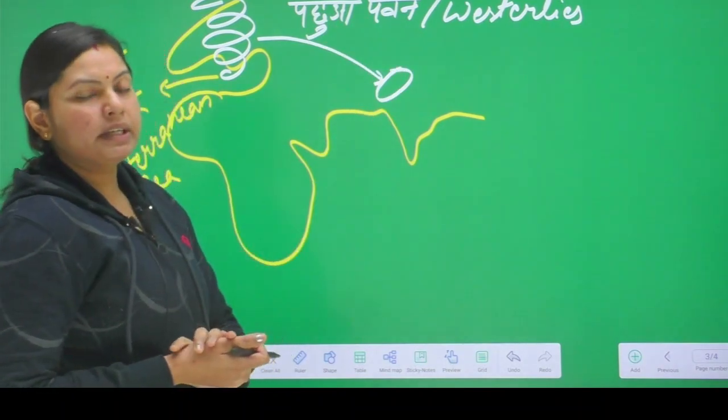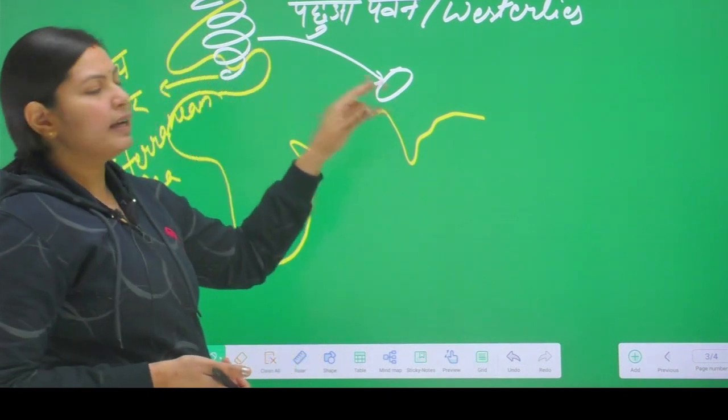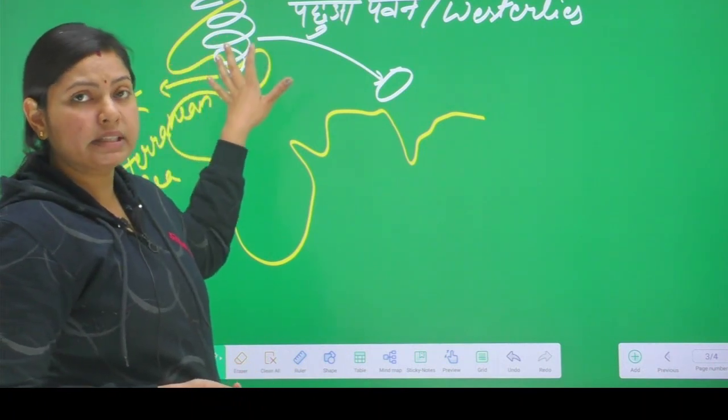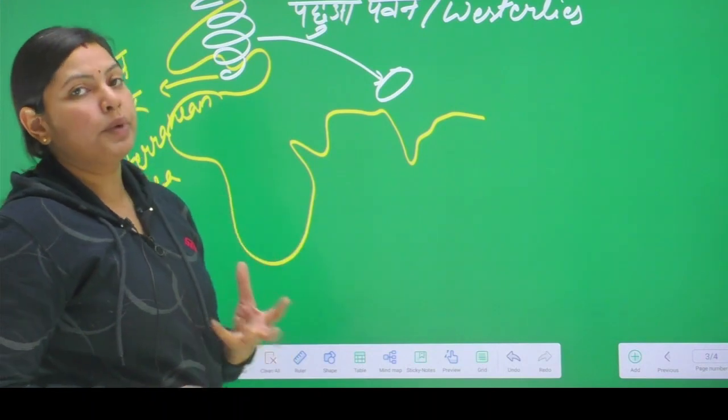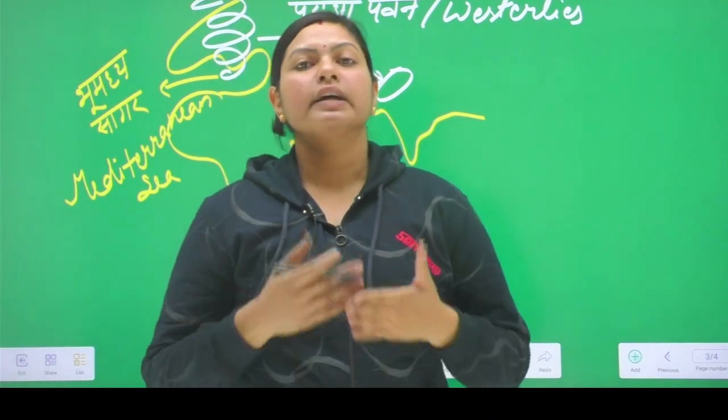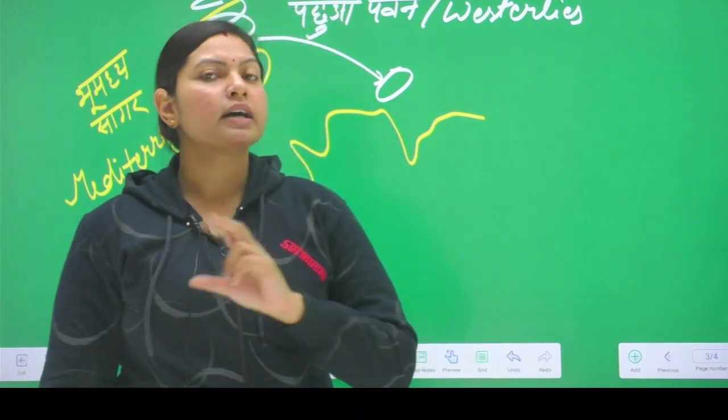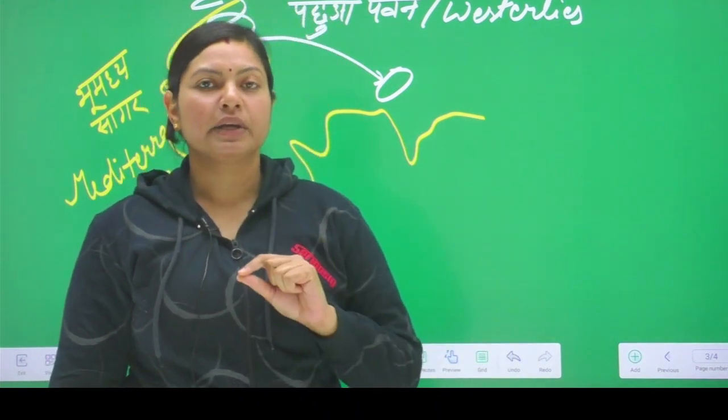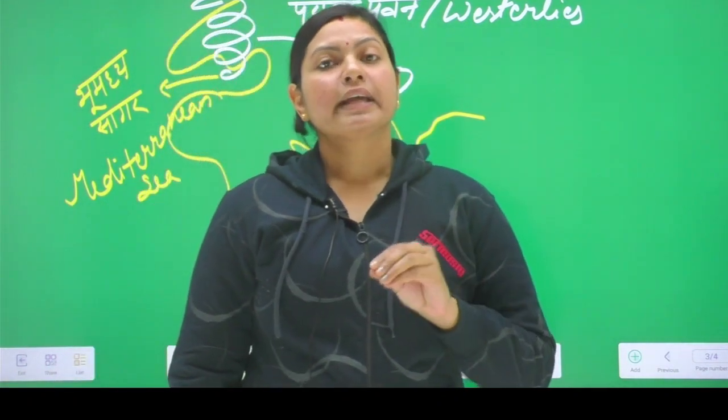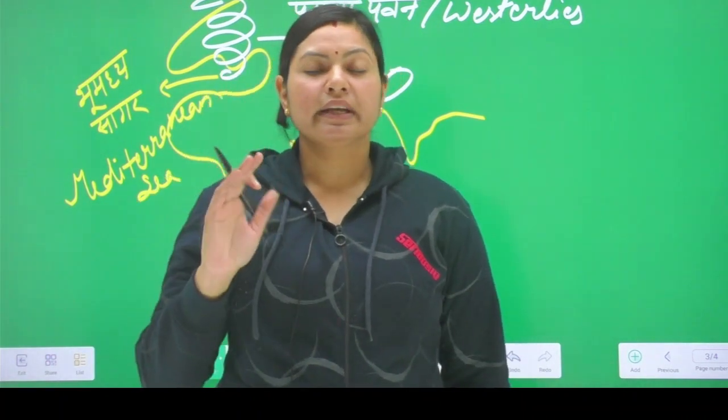Now the first thing that we have to understand is that these are the pachwa, these are the chakravat which are brought up here, on the Mediterranean Sea. What is the chakravat formation? So when there is sardiya, we are talking about the northern hemisphere of the earth, where is the sardiya? In the Dakshini Golaard or in the southern hemisphere? We are talking about the Makar Rekha, which is the tropic of Capricorn.